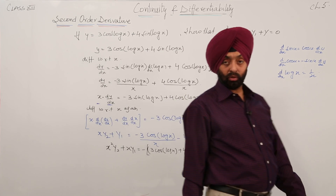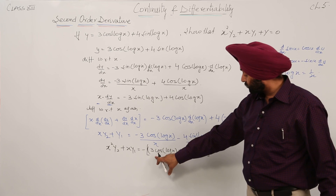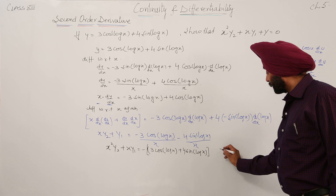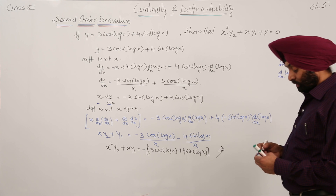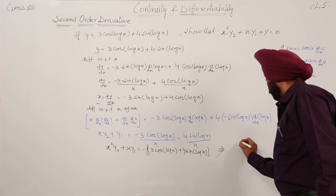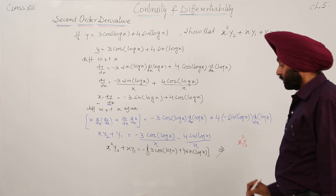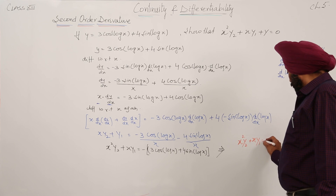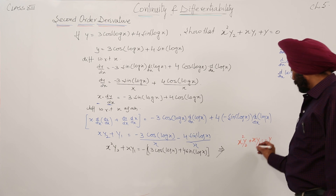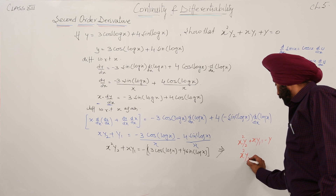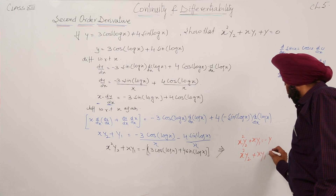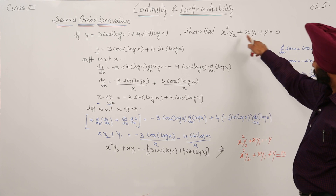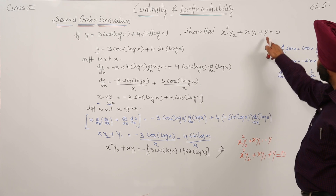So x square y2 plus x — just look on the board — this is the question. We have 3 cos log x plus 4 sin log x on the right side. This can be further written as: x square with y double derivative plus x with y single derivative plus y is equal to 0. So basically this is what we had to show — x square y double derivative plus x y single derivative plus y equals 0. Hence proved.